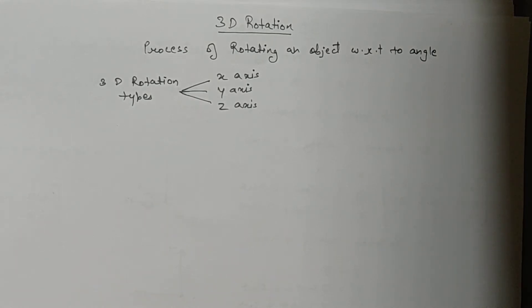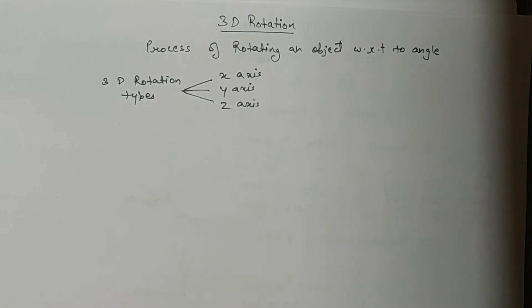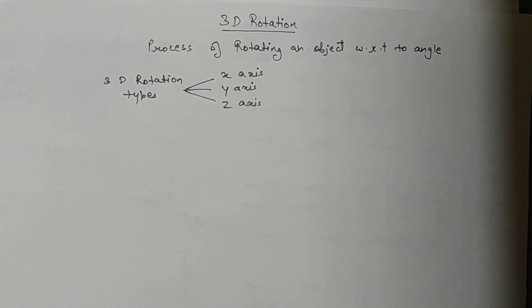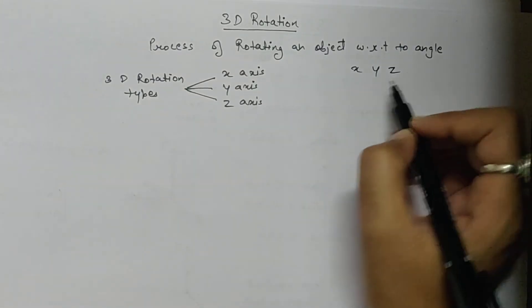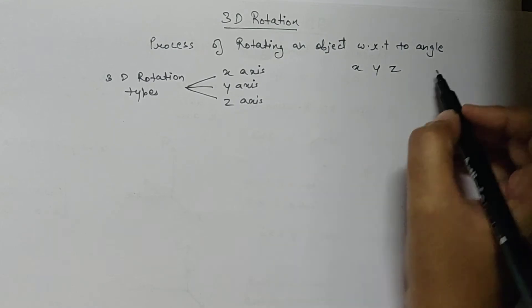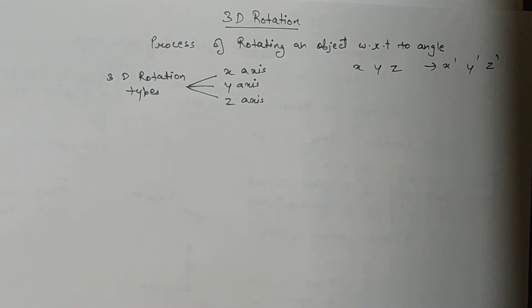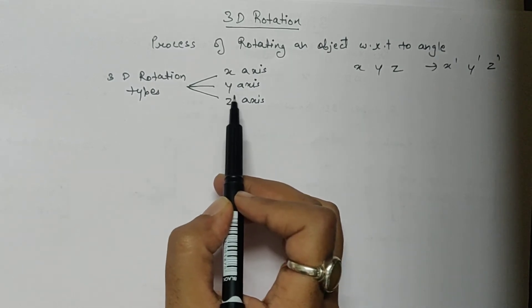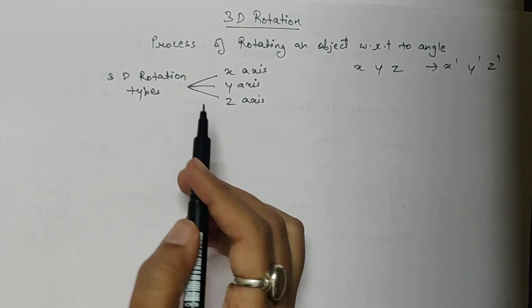Hello, I am Sharwali Sarmaik and today we will be seeing 3D rotation. 3D rotation is the process of rotating an object with respect to an angle. We have already seen 2D rotation; this is similar but the object will be in three dimensions. My three dimensions will be x, y, and z — these are my original coordinates, whereas my new coordinates will be x dash, y dash, and z dash. In 3D rotation we have three types: rotating along x axis, rotation along y axis, and rotation along z axis.